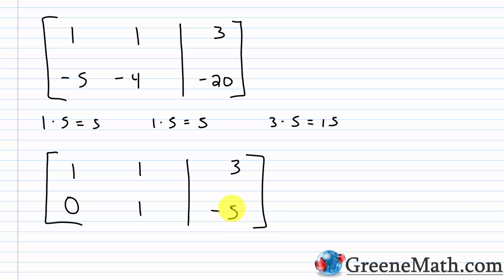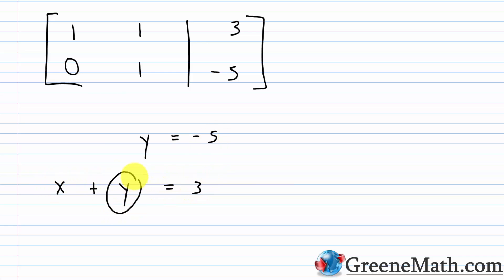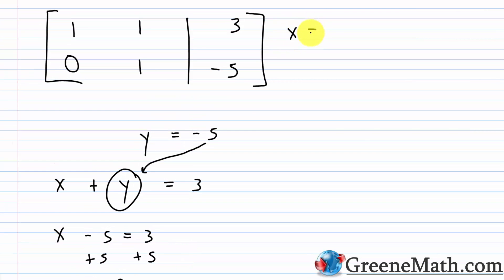We've already achieved row echelon form: ones down the diagonal, a zero in the lower left, and real numbers elsewhere. From the bottom row, 1y equals negative 5, so y equals negative 5. Substituting into the top row: x plus y equals 3, so x plus negative 5 equals 3. Adding 5 to each side gives x equals 8. The solution is x equals 8, y equals negative 5, or the ordered pair (8, negative 5).